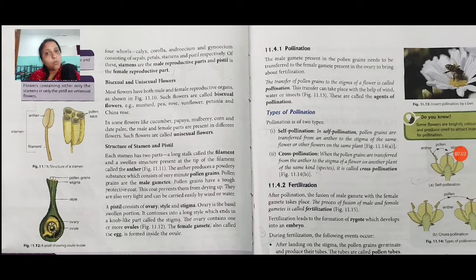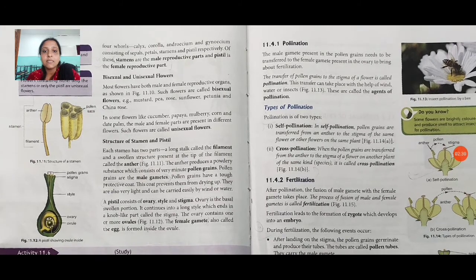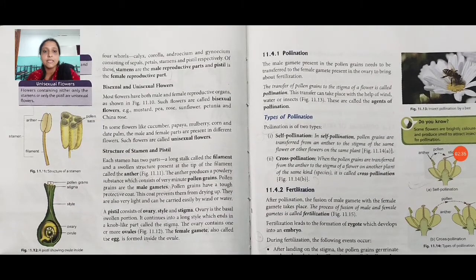This coating always protects them from drying up. Pollen grains are also very light and can be carried easily by wind or water. A pistil consists of ovary, style, and stigma. The ovary is the basal swelling portion that continues into a long style, which ends in a knob-like part called the stigma. You can see here in figure 11.12 the parts: pollen, stigma, style, and ovary.